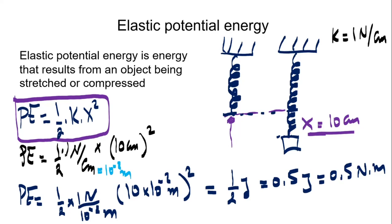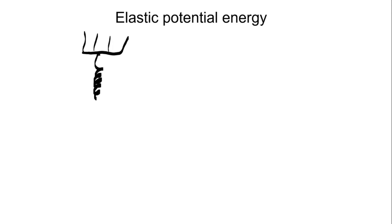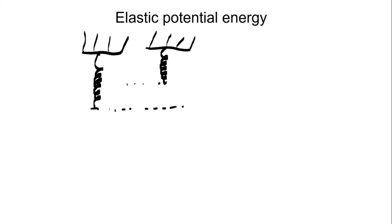We keep the same spring and compress it by the same amount — this X. When compressed, X in this case will be negative 10 centimeters.